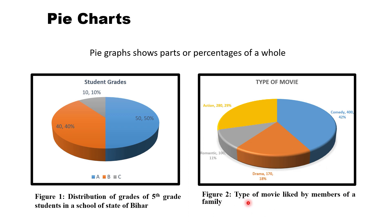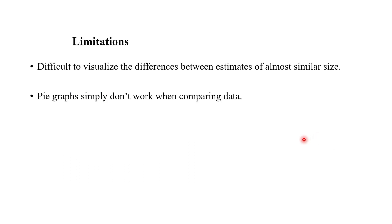Similarly, figure two represents the type of movie liked by members of a family. By looking at this graph, it is very clear that the majority of people like comedy movies, followed by action movies at almost 30 percent.